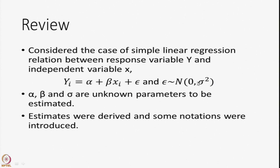It is a very natural assumption to make with respect to random errors. There is a slight change in notation from the previous class: previously we said yi = beta_0 + beta_1*xi. For simplicity, we are changing it to alpha + beta*xi. So in this case, alpha, beta, and sigma are unknown parameters that need to be estimated, and we had derived those estimates and used some freshly introduced notations.